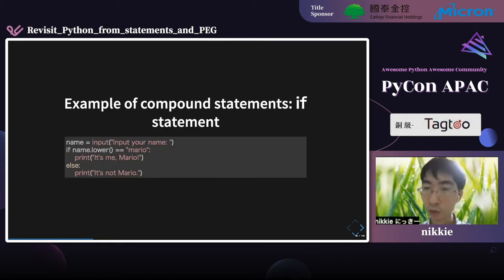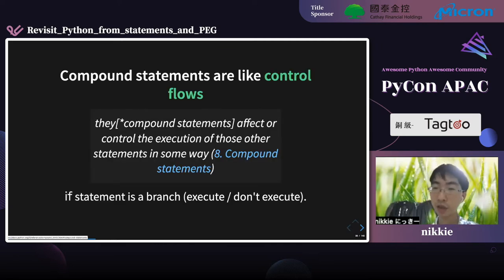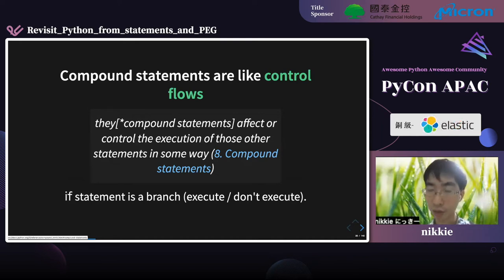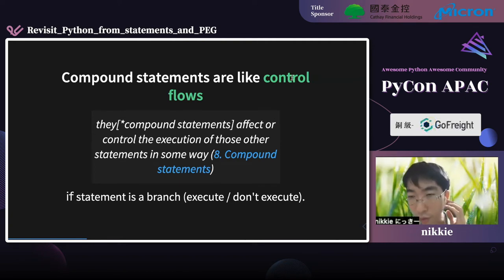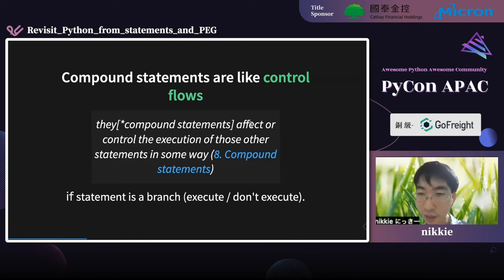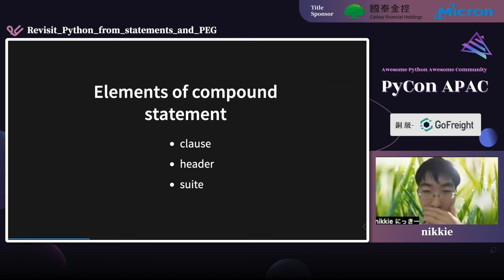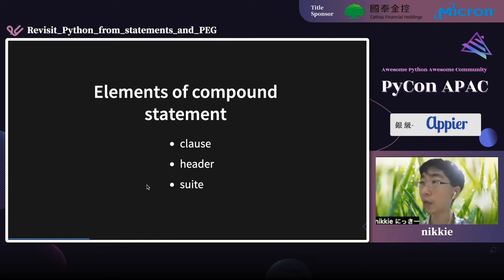An example of a compound statement is the if statement we saw earlier — the mario if statement. In addition to if, there are other compound statements such as try and with. The overview of a compound statement is control flow — a compound statement controls the execution of other statements contained in it. There are three elements that make up a compound statement: clause, header, and suite.